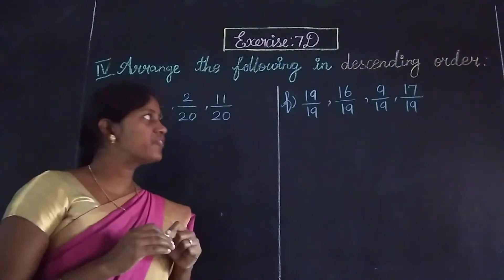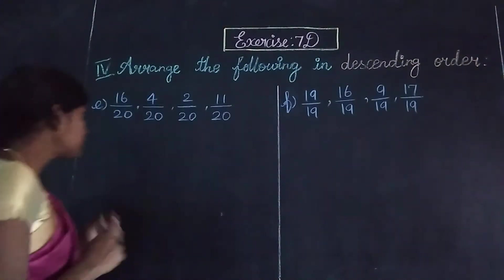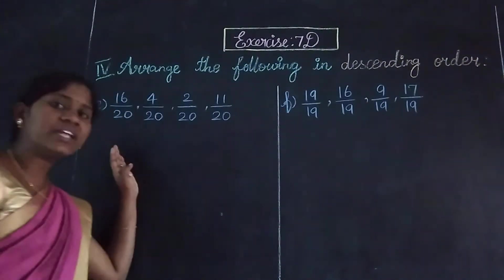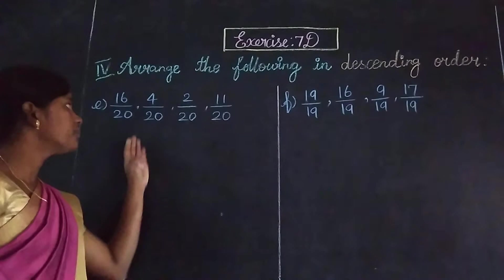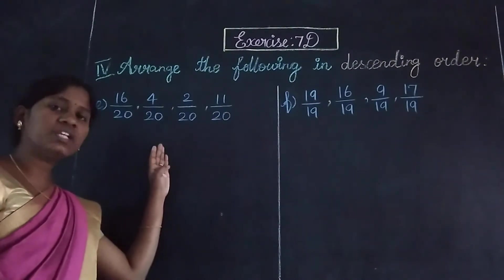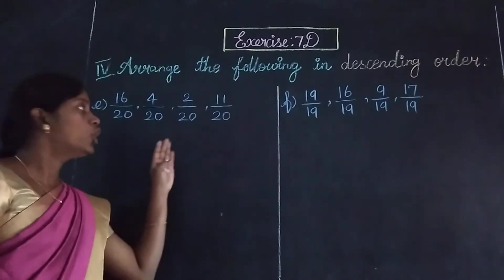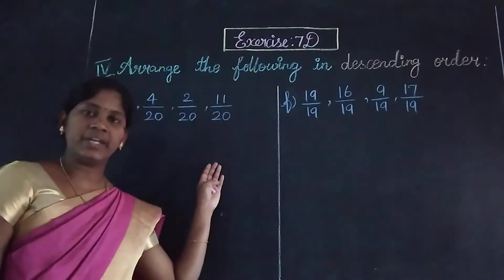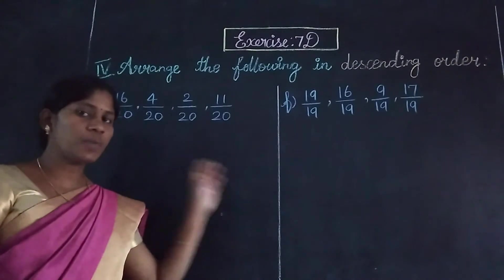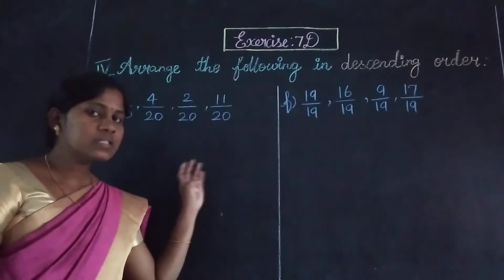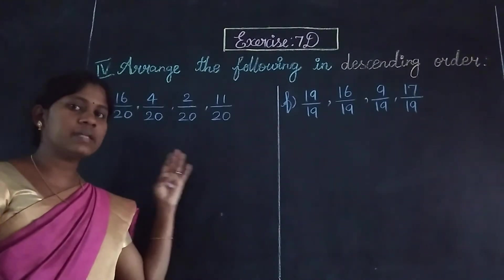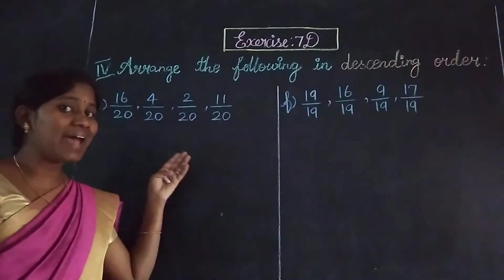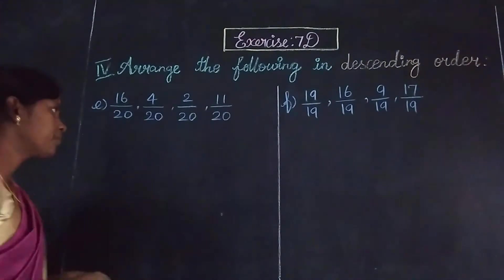The first one is 16 by 20, 4 by 20, 2 by 20, 11 by 20. The denominators are the same. So we will compare the numerators.